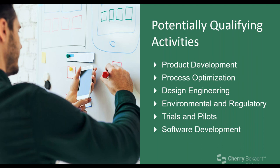Potential qualifying activities include product development — the easiest to spot — as well as process optimization, design engineering, environmental and regulatory activities such as COVID-related trials or pilots, and software development. Software development qualifies not only when used by customers but also software developed to run your own business or manufacturing machines. It's quite a diverse area to think about and consider as qualifying.